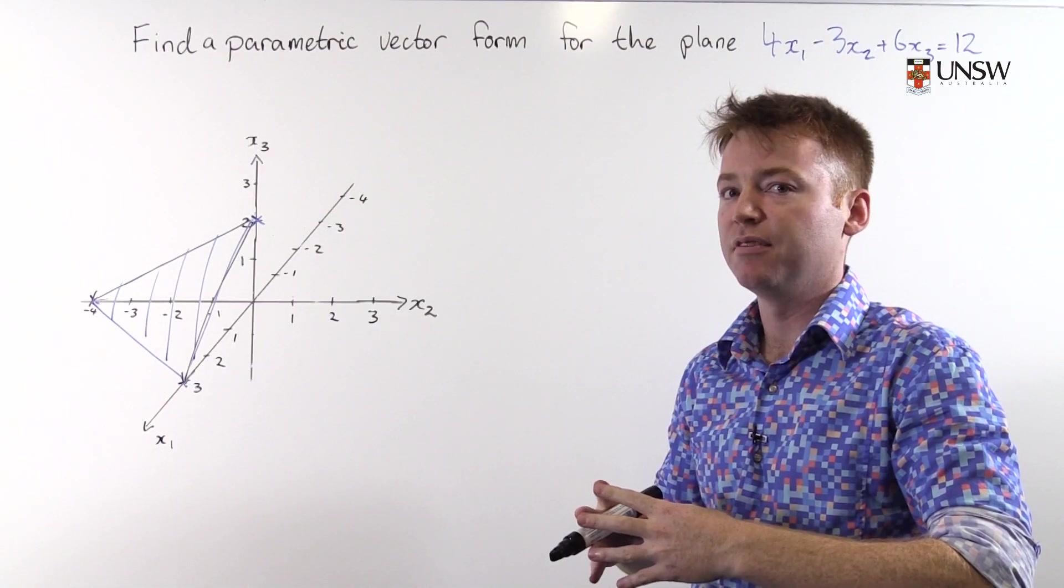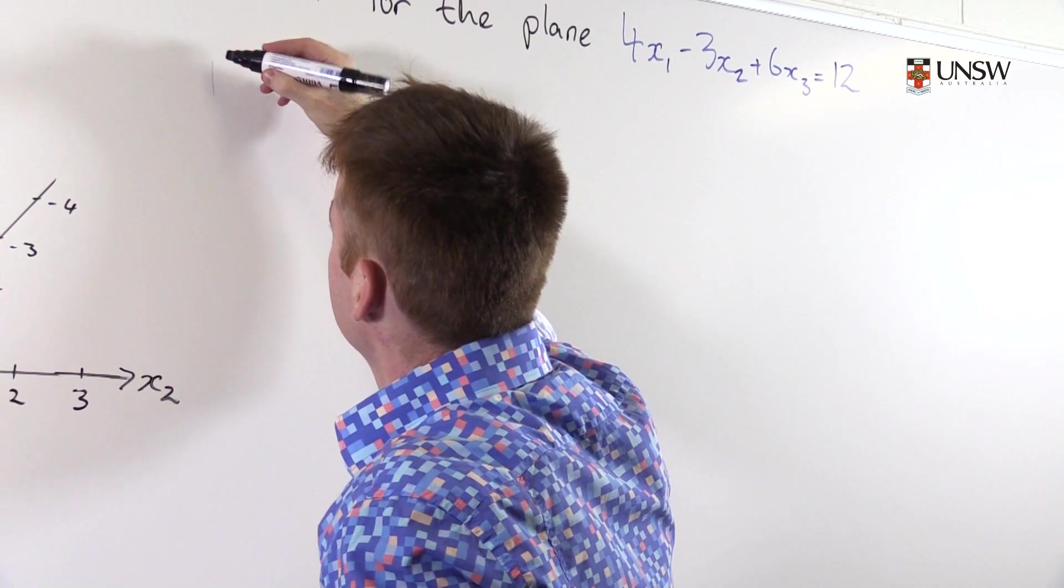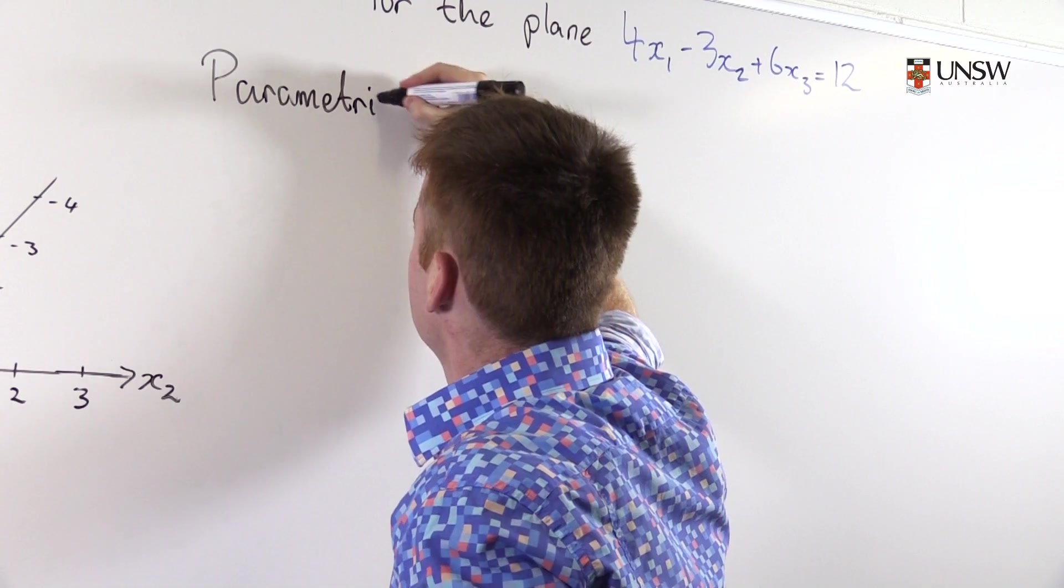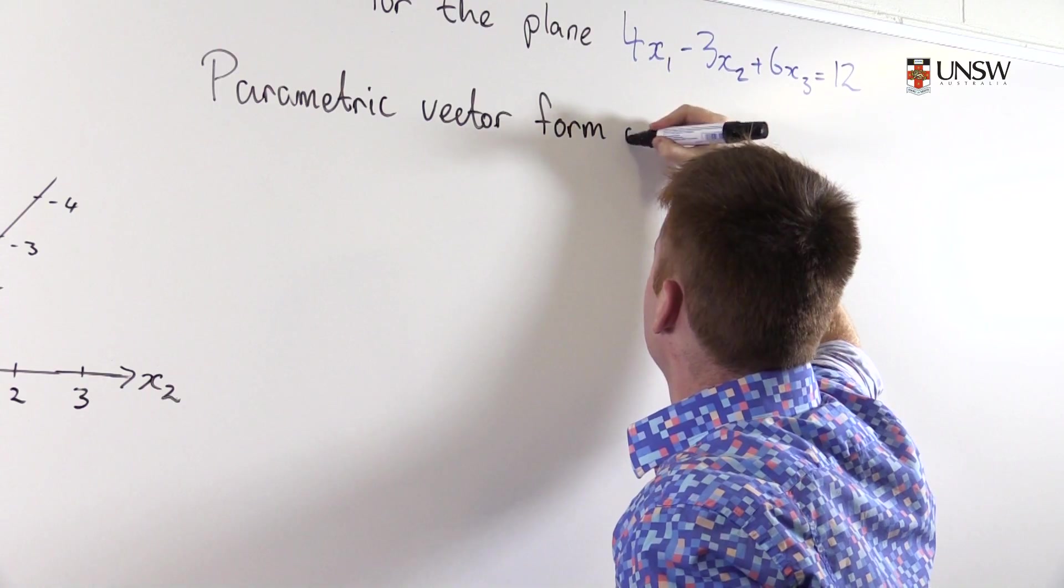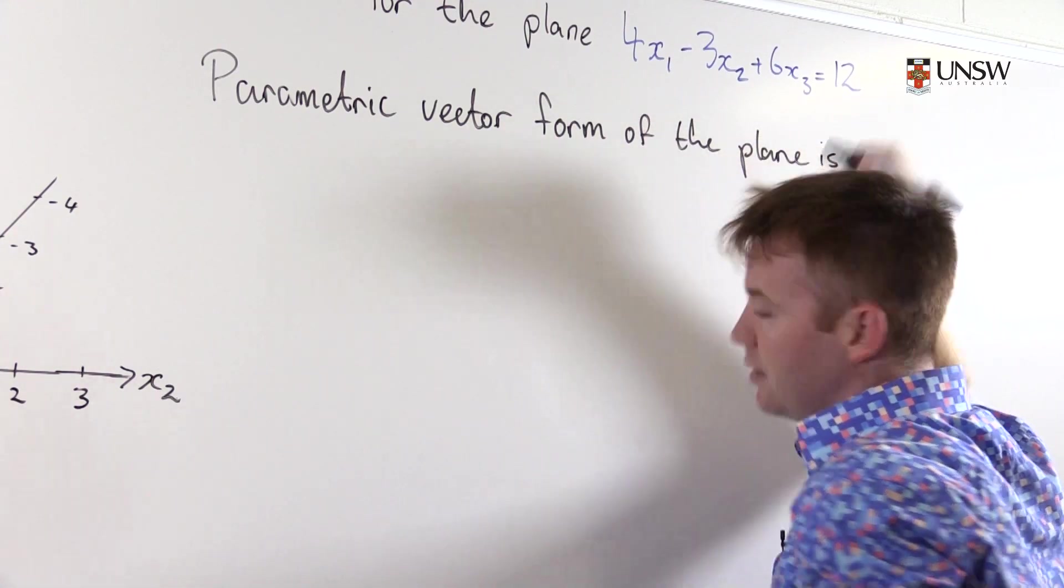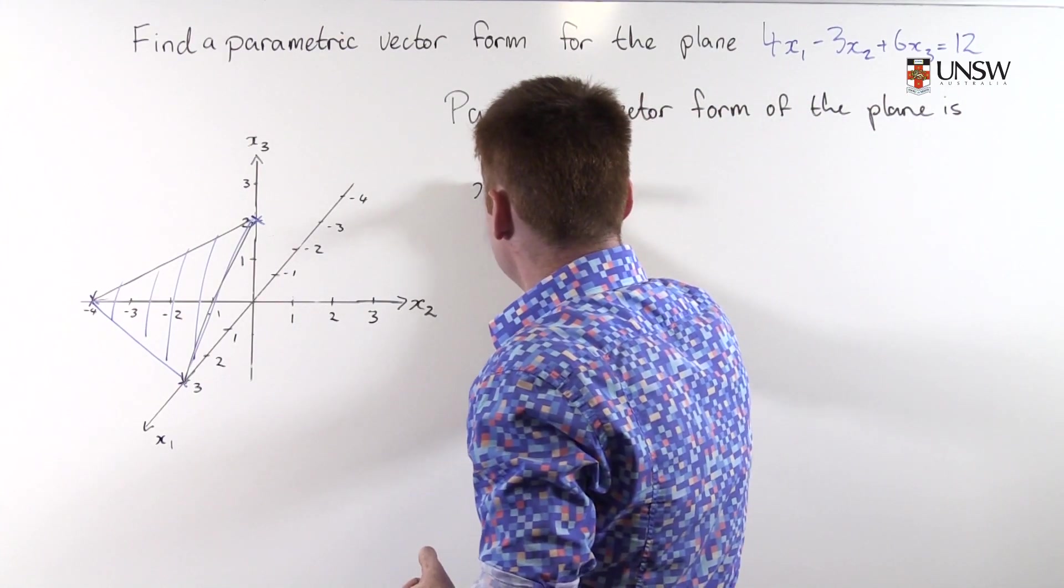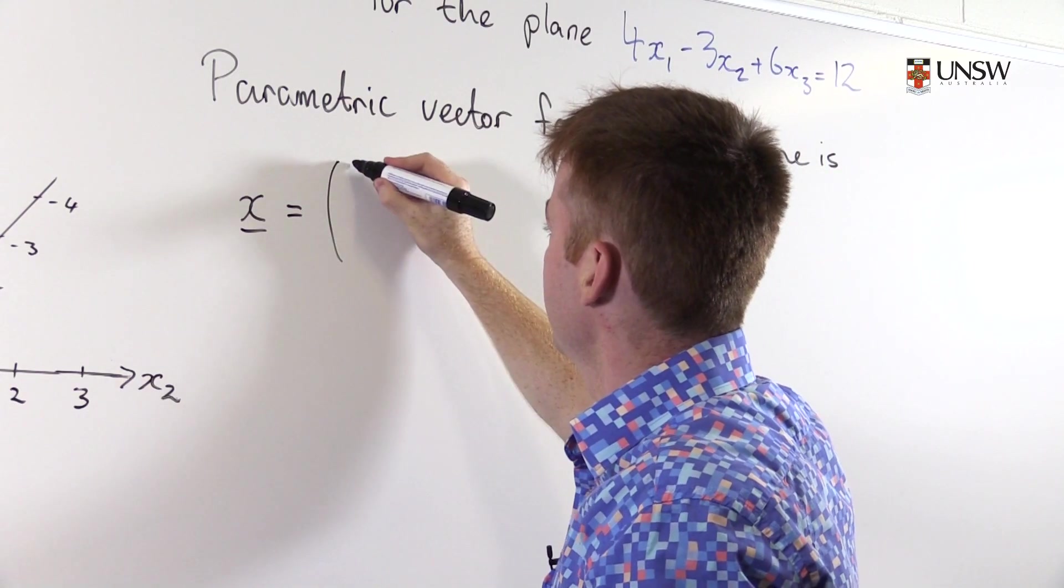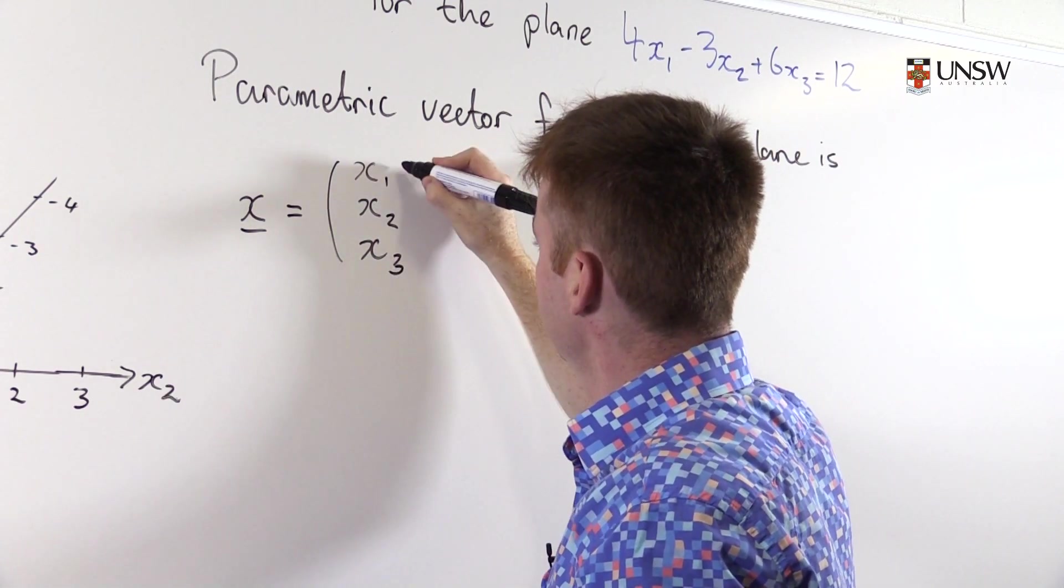I mentioned earlier that there was a faster way of doing this question. And here it is. You just start writing down parametric vector form of the plane. You begin with your vector x like this and you expand that a bit, you unpack your x with x₁, x₂, x₃ like that.